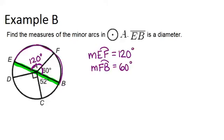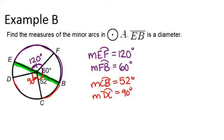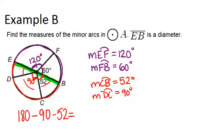Now for the other half of the circle: this angle is 52 degrees and this is a right angle, so it's 90 degrees. So arc CB equals 52 degrees and arc DC equals 90 degrees. For the last arc, arc ED, we use the fact that half the circle is 180 degrees: 180 minus 90 minus 52 gives us 38 degrees. So arc ED is 38 degrees.